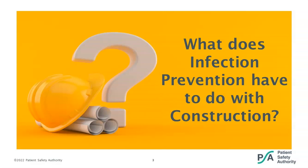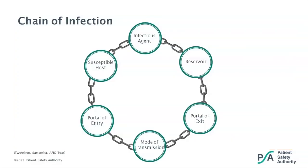Regardless of the size of the construction or renovation project, it can impact air and water quality within the facility, and therefore have an adverse effect on the safety of residents, staff, and visitors. Construction is the ultimate exercise in the separation of clean and dirty. To fully understand the role infection prevention plays in construction, we need to consider the chain of infection — what are the components and how do they interact and impact one another? We're going to look at each of these components individually and where they can be found in construction and renovation projects.